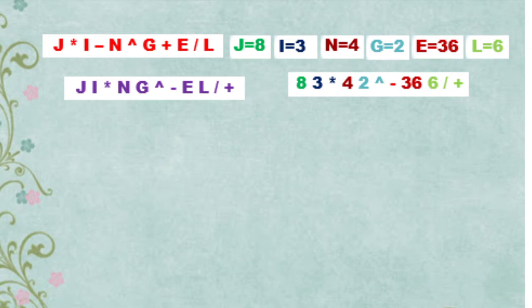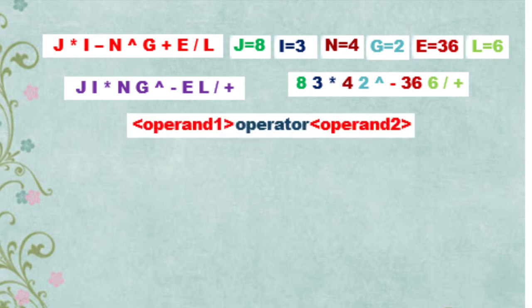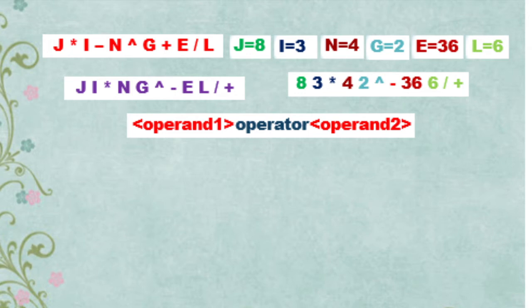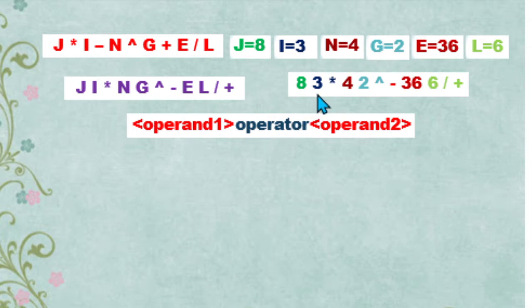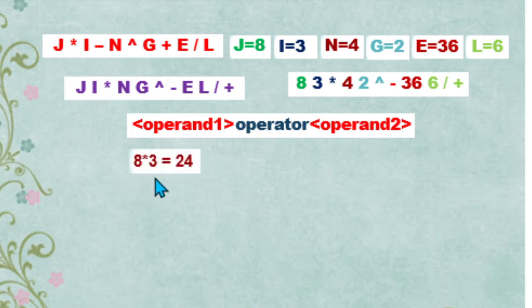After we have found the first operator, we are going to look for the immediate two operands to the left of this operator and then perform the operation. The pattern we will be using is: operand 1, operator, operand 2. Our first operator is multiplication, and the immediate two operands to its left are 8 and 3. So 8 is operand 1 and 3 is operand 2, and we perform 8 multiplied by 3, which is equivalent to 24.